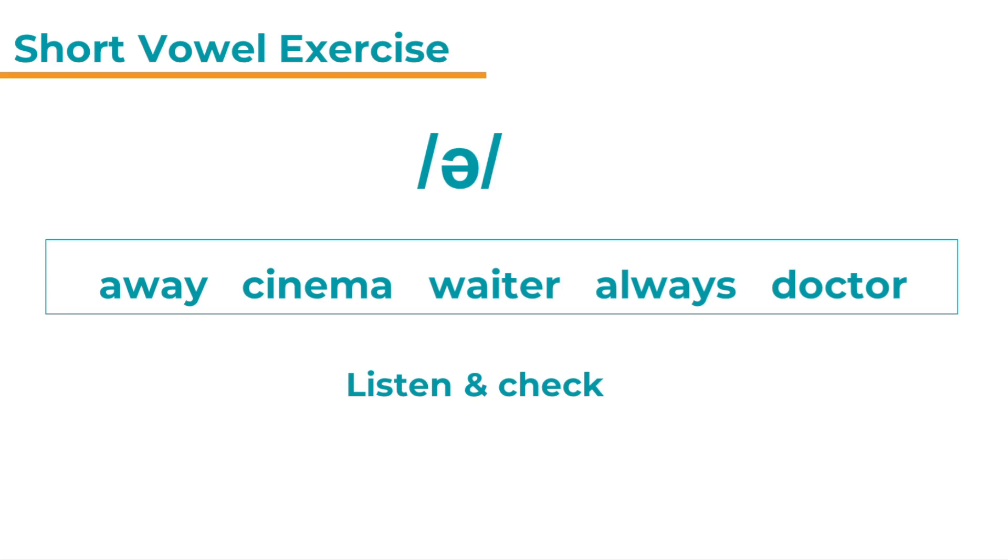Listen and check. I think this is a little bit more difficult so I'm going to read them out one more time. And the answer is always. We have two vowel sounds here. A long vowel sound at the start and then a diphthong, a double vowel sound. Both of them are represented by the letter a but they are two different pronunciations. Always but no schwa.